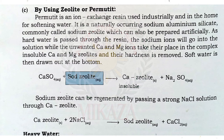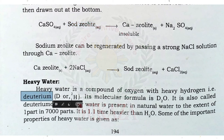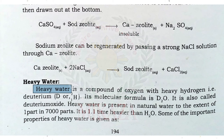Now we have heavy water. Heavy water is a compound of oxygen with heavy hydrogen (deuterium). Deuterium is an isotope of hydrogen having one electron, one proton, and one neutron, giving it an atomic mass of 2. When oxygen reacts with deuterium, the water produced is known as heavy water, and it is usually written as D₂O.